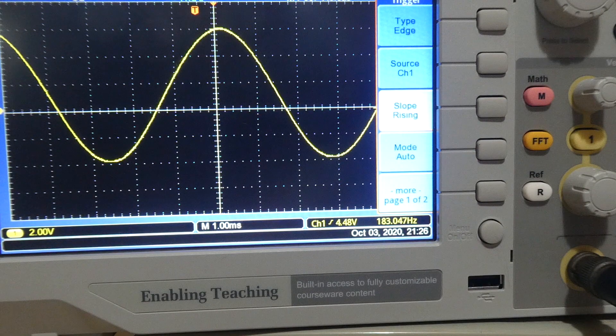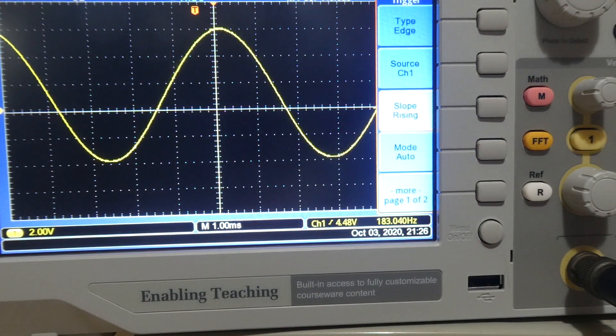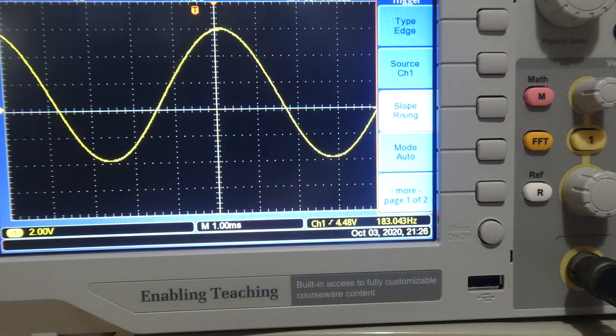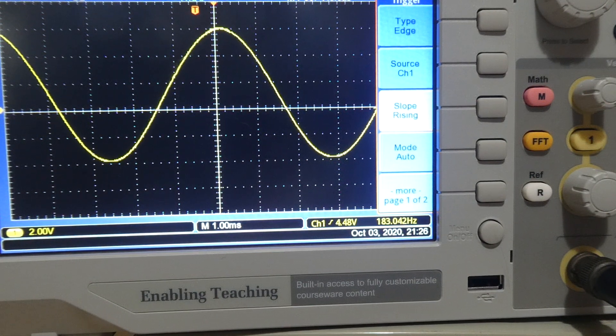I've now connected the signal generator to the oscilloscope and moved away from the calibration connection. I've selected a sine wave which gives us something more interesting to look at.